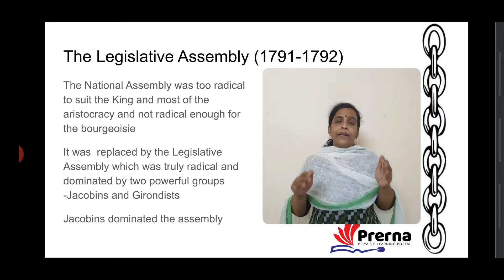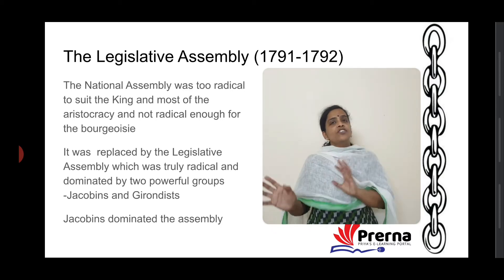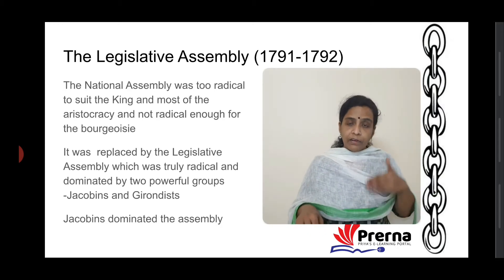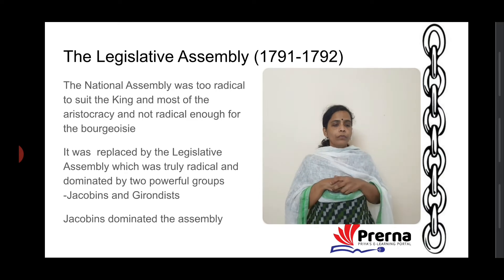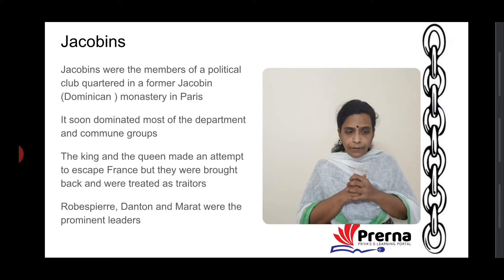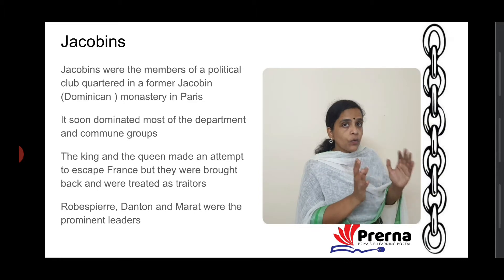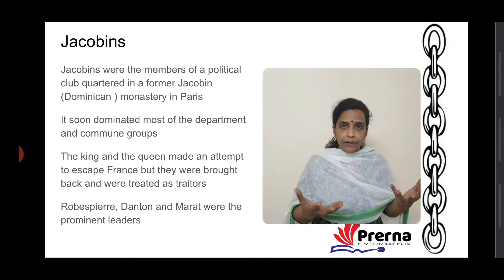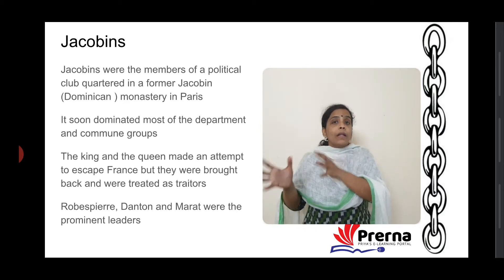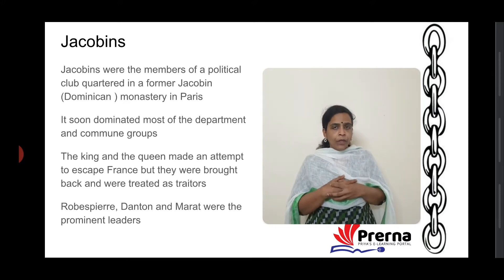The Legislative Assembly operated in the period 1791 to 1792, dominated by the Jacobins and Girondins. The Jacobins were members of a political club which met at a Dominican monastery in Paris — that is why they are called Jacobins. There were all kinds of meetings and clubs, and the Jacobin clubs gave the Jacobins their name. They started dominating this period.